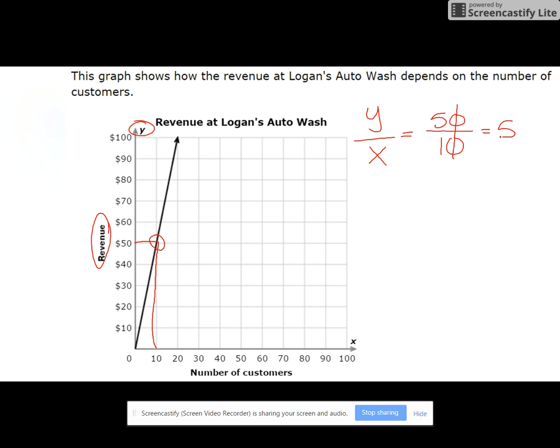So it's going to be $50 over 10. That's going to be 5. So our revenue is going to be $5 per customer.